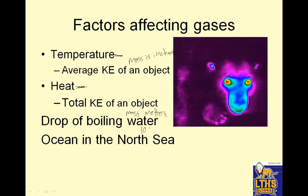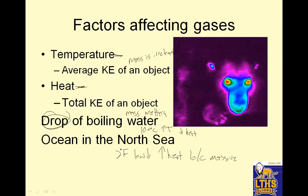A drop of boiling water is 100 degrees Celsius — it has a high temperature. But because it's only a drop, it has low heat. The ocean in the North Sea is 2 degrees Fahrenheit, so it has a low temperature, but it has a high heat because it's so massive.